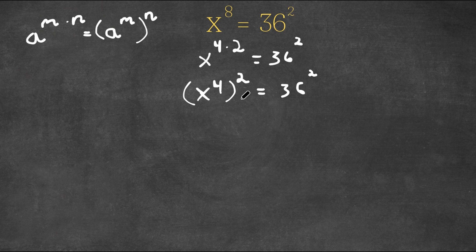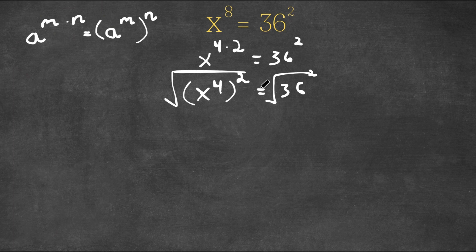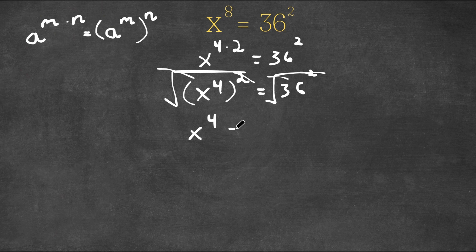And now I'm going to take the square root on both sides. So we have the square root of x to the power of 4 squared, and we also have the square root of 36 squared. The square root cancels both of these powers, so now we have x to the power of 4 is equal to 36.